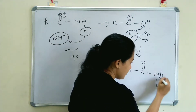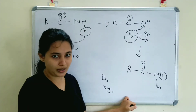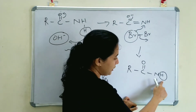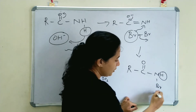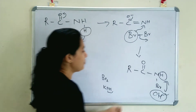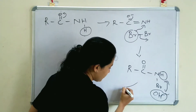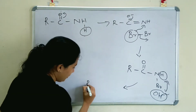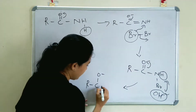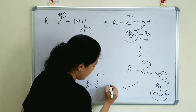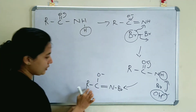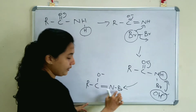Again, this hydrogen is eliminated as H⁺ and combines with OH⁻ to form water. The electron shifts, forming a double bond, giving R-C(=O)-N=Br (N-bromoamide anion).